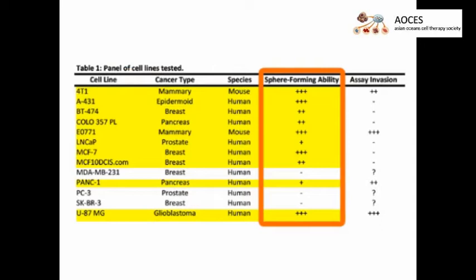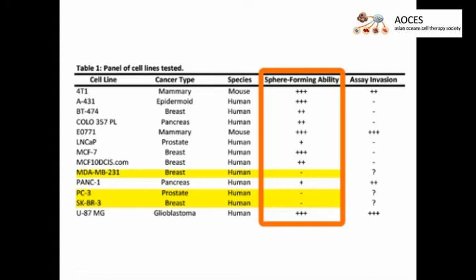In testing a panel of cancer cell lines, most were observed to form spheroids using the Hanging Drop culture method. Several cell lines, however, were unable to form spheroids when using this culture method.